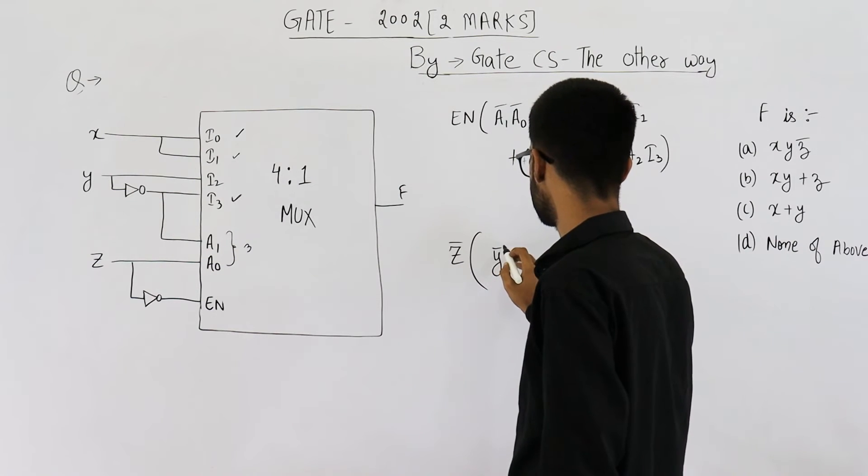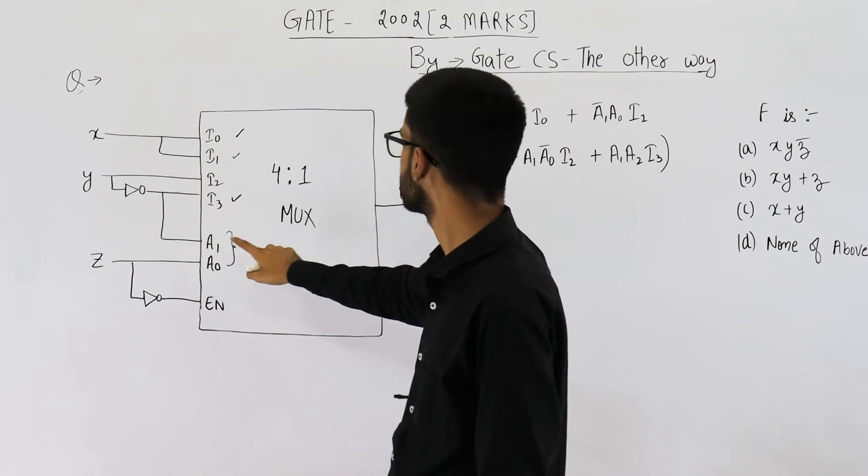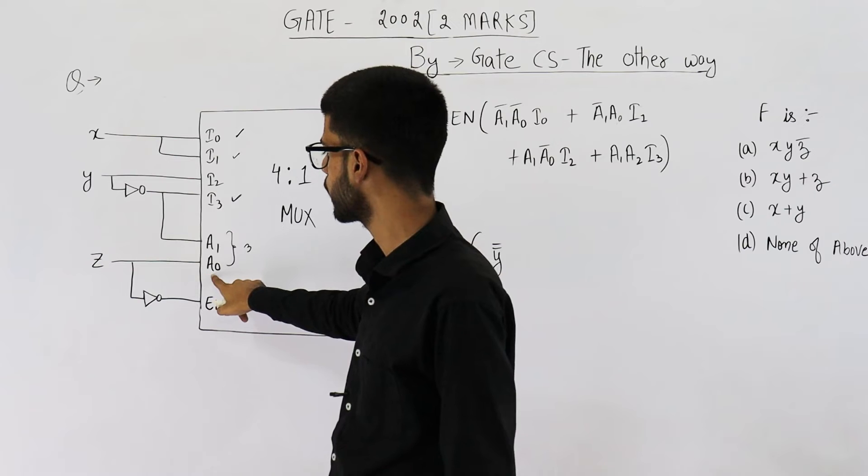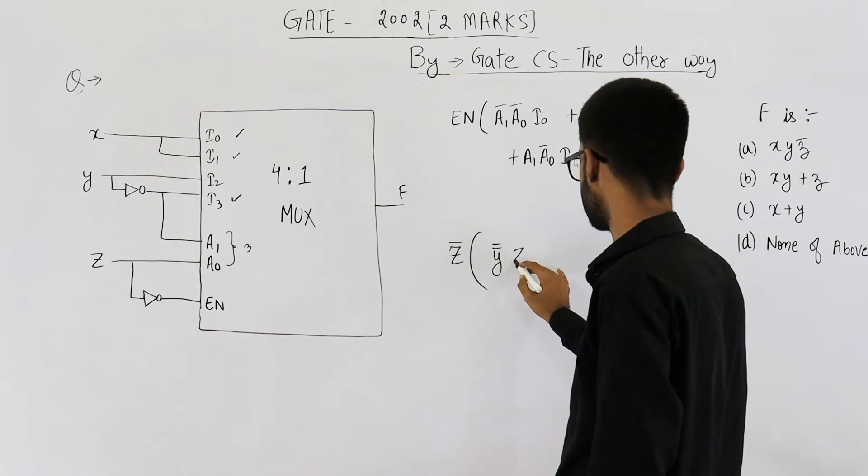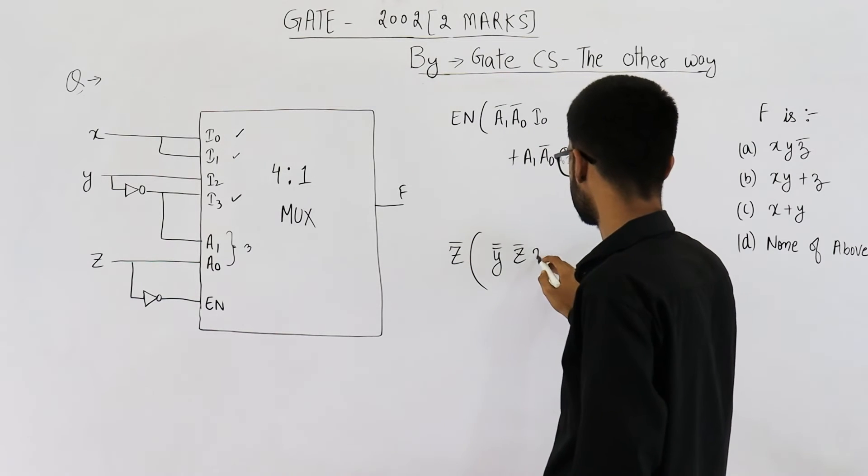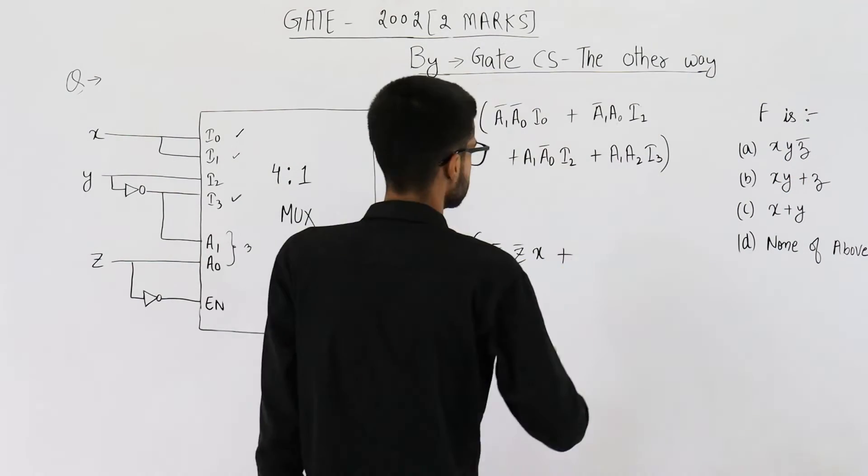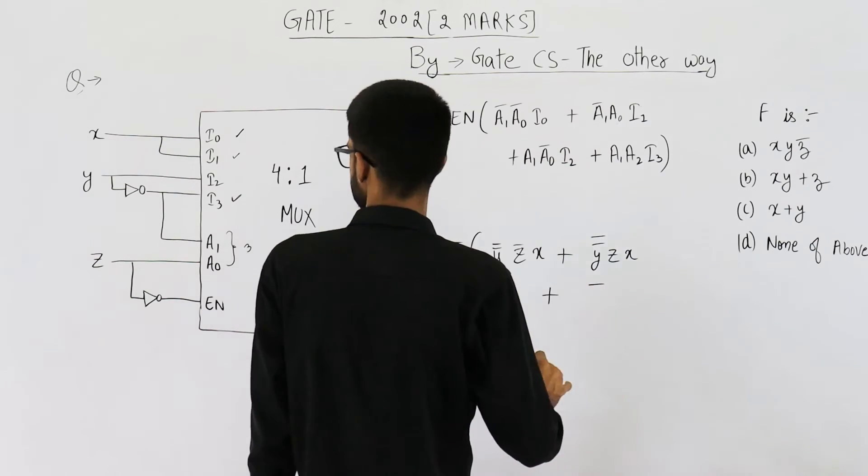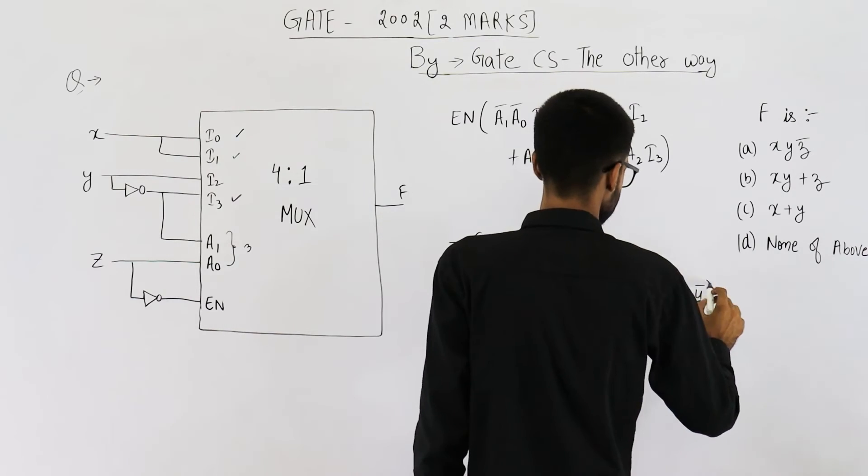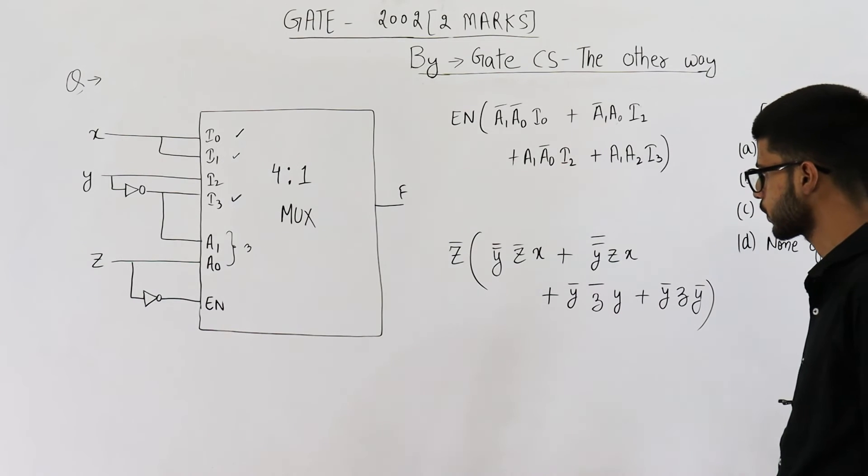So, it is Y bar double bar. See, A1 is already complement of Y and we want its complement. The next one is Z. A0 is Z but we want complement of Z. And I0. I0 is X. Similarly, I am substituting all of these values. You can have a look at that. So, you can see I have substituted all of these values and this is what you are going to get.